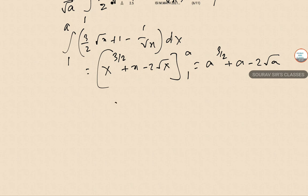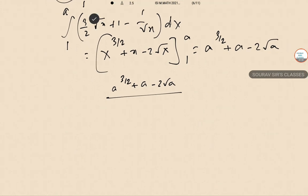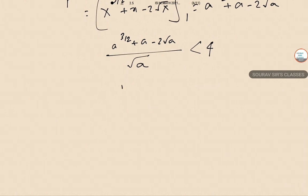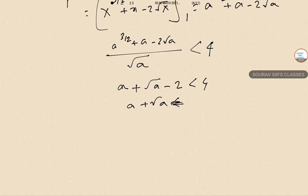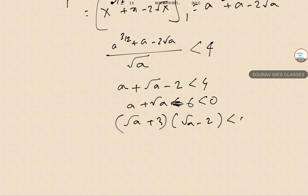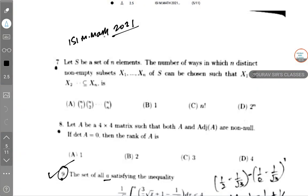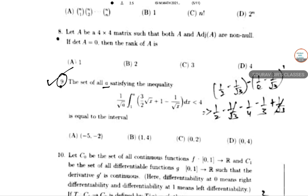The inequality then becomes (A^(3/2) + A - 2√A) divided by √A less than 4. Dividing through by √A gives: A + √A - 2 less than 4, so A + √A - 6 < 0. Factoring: (√A + 3)(√A - 2) < 0. Since √A + 3 is always positive, we need √A < 2.